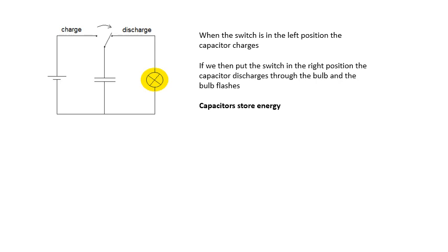Look at this circuit. When the switch is over there, the capacitor charges up. When we flick the switch over here, the capacitor will discharge. And in this case, it discharges through a bulb, and the bulb flashes. So, what's happening is that electrical potential energy is being transferred into heat and light energy in the bulb. So, the capacitor discharges through the bulb, the bulb flashes. Capacitors store energy.